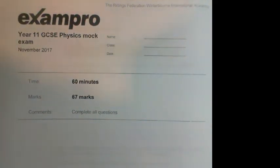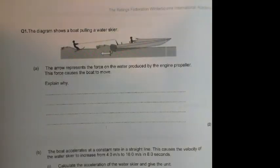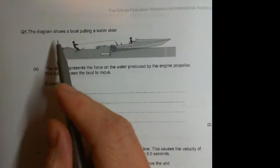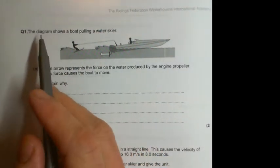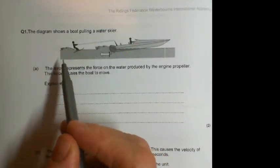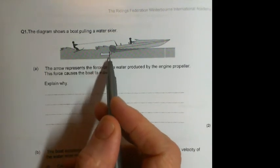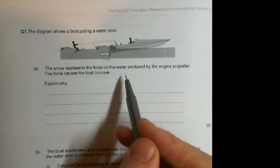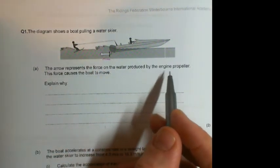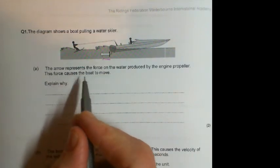Okay, so first question, question number one. When I read a question I always jump to this bit here, but this one's only a short one so don't worry. The diagram shows the boat pulling a skier. The arrow represents the force on the water produced by the engine propeller. This force causes the boat to move. Explain why.